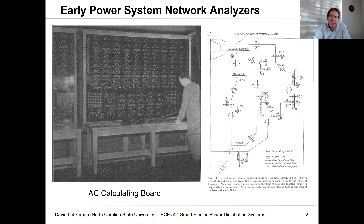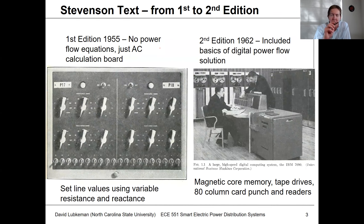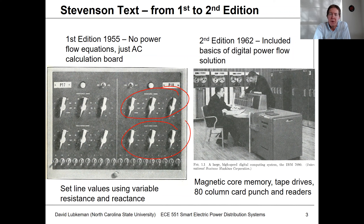Looking at this board, you basically see a bunch of dials. In a close-up of a line module, you can see that you could set the line resistance and the line reactance. If you've had a circuits lab before, you might have used one of these decade resistance boxes where you can dial in any resistance you want. You do the same thing here, and you could switch it in or out of the circuit. This is what we had in the 50s and parts of the 60s to do transmission system calculations.